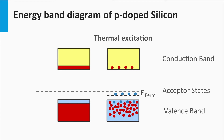P-doping of silicon can be illustrated by an electronic band diagram as well. The boron atoms result in acceptor states. These acceptor states have an energy level within the forbidden band gap of the silicon matrix, and the acceptor states can be occupied by electrons. The energy level of the acceptor states is closer to the valence band than to the conduction band. This means that it requires much less energy for an electron to jump from the valence band to the acceptor state than to the conduction band.